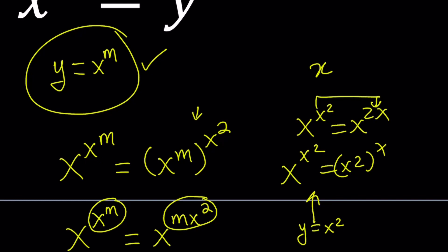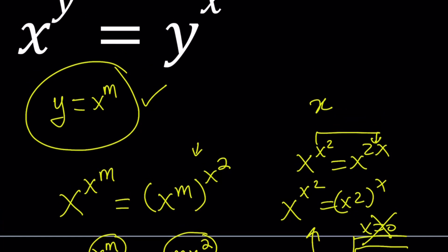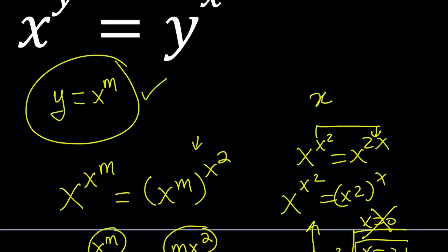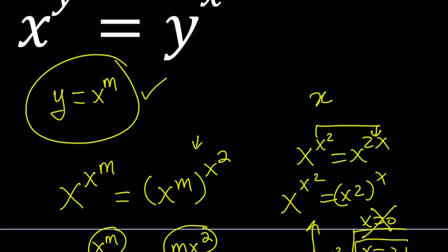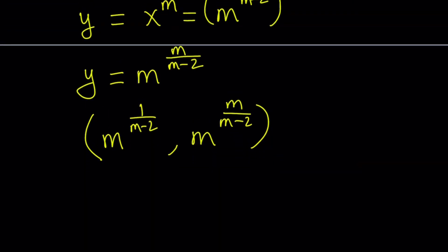But x equals 0 is rejected, since 0 to the power 0 is undefined. So x equals 2 is the only solution from here. And since y equals x squared, y would be 4 in this case. You can look at that case separately.